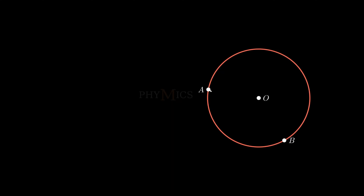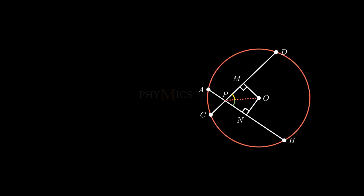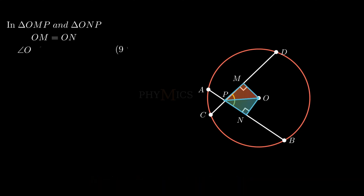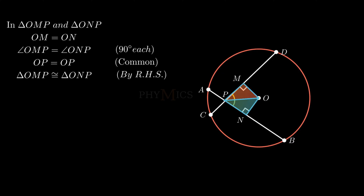Moving on to the next problem. There is a circle with center O such that AB and CD are two equal chords within the circle. Let point P be the point of intersection of these equal chords. We need to show that the line joining point P to center O makes equal angles with the chords, i.e. angle OPD equals angle OPB. We construct perpendiculars from O to the equal chords AB and CD, forming triangles OPM and ONP. Segment OM equals segment ON, as equal chords are equidistant from the center. Angle OMP equals angle ONP, as OM and ON are perpendicular from point O. Segment OP is common to both triangles. Therefore, by RHS congruency, triangle OMP is congruent to triangle ONP, and by CPCT, angle OPM equals angle OPN. Hence, the problem is solved.